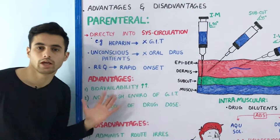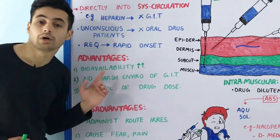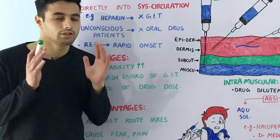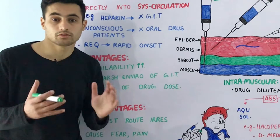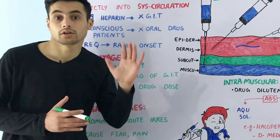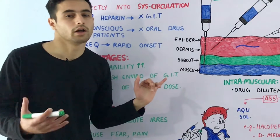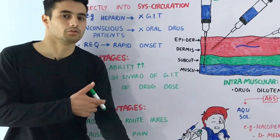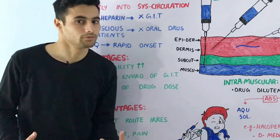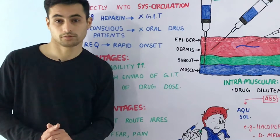The major advantage of the parenteral route is increased bioavailability. Bioavailability is the actual amount or concentration of the drug which actually reaches the target tissue or target cell. In the case of the parenteral route, bioavailability is increased because when you inject the drug into your bloodstream or systemic circulation, it doesn't pass through your liver, so it doesn't go through the first-pass effect or first-pass metabolism.